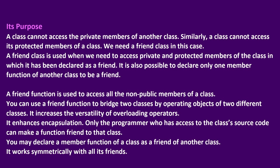A class cannot access the private members of another class, and similarly cannot access its protected members. We need a friend class in this case. A friend class is used when you need to access private and protected members of the class in which it has been declared as a friend. It is also possible to declare any one member function of another class to be a friend. A friend function is used to access all the non-public members of a class. You can use a friend function to bridge two classes by operating objects of two different classes. It increases the versatility of overloading operators and enhances encapsulation.